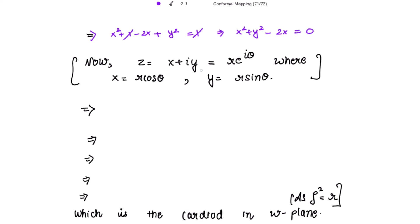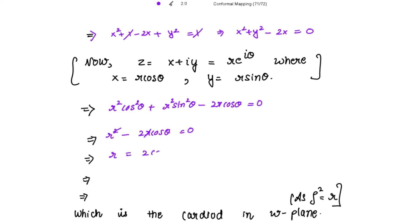Now z = x + iy in polar form is re^(iθ), where x = r cosθ and y = r sinθ. Substituting into x² + y² - 2x = 0, we get r²cos²θ + r²sin²θ - 2r cosθ = 0. Taking r² common, cos²θ + sin²θ = 1, so r² - 2r cosθ = 0. Dividing by r, we get r = 2cosθ.